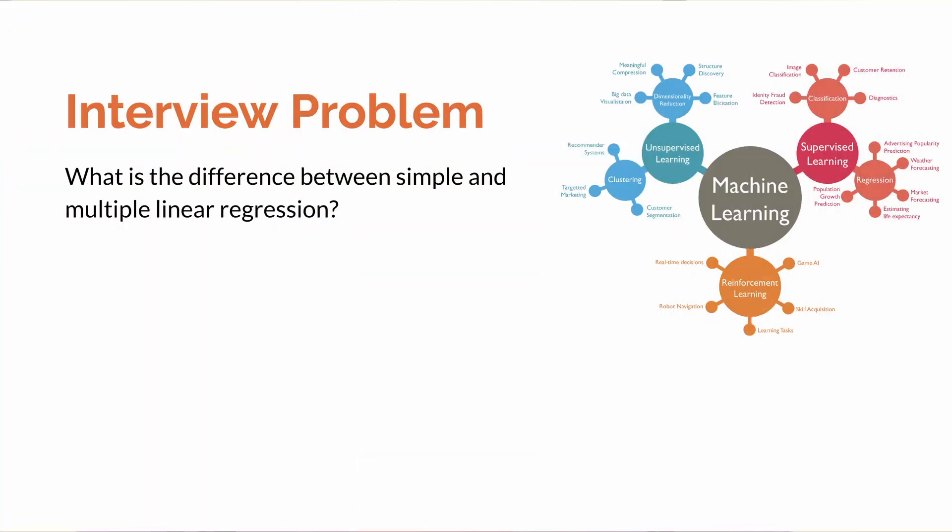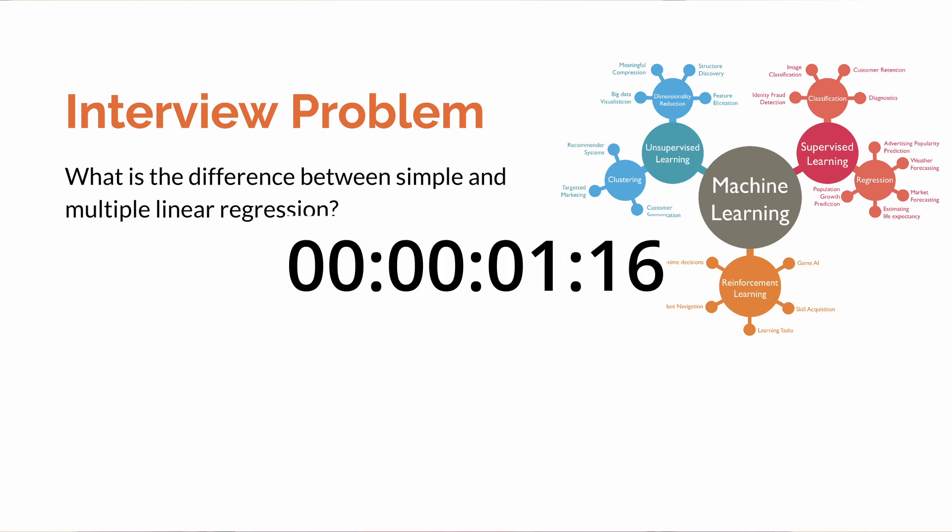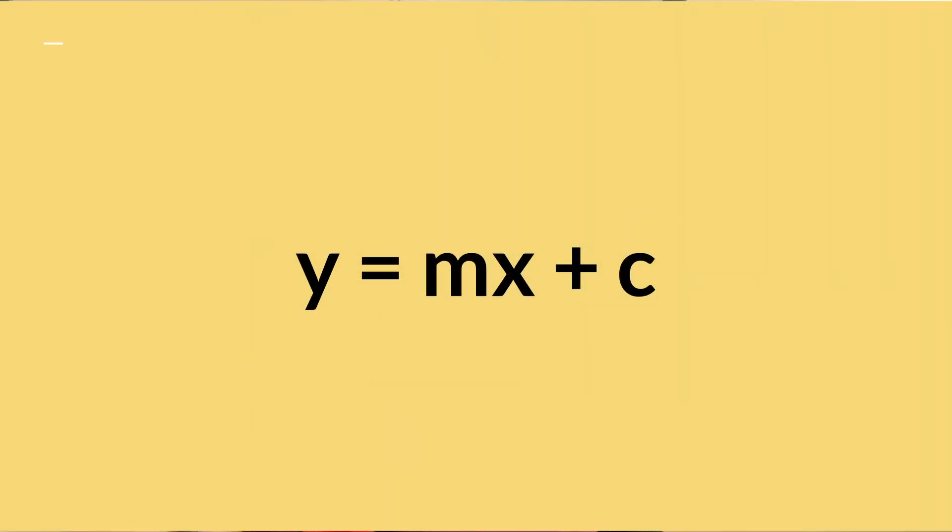The second question: what is the difference between simple and multiple linear regression? Simple linear regression involves one independent variable and one dependent variable, so it fits a straight line. The equation is something like y = mx + c, where x is the feature, m is the weight, c is the bias, and y is our target variable. We try to find this line, which is the best fit line, in the case of simple linear regression.